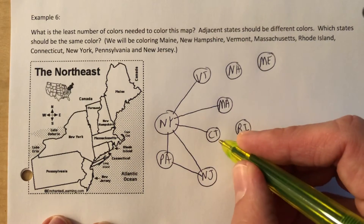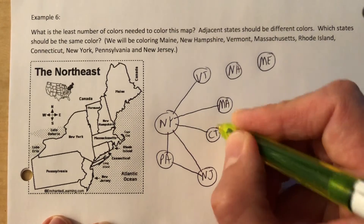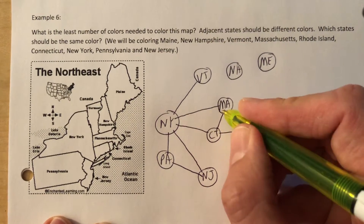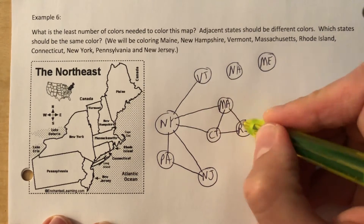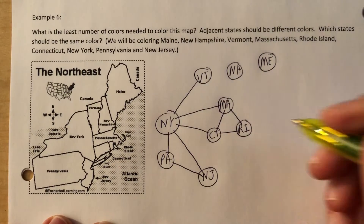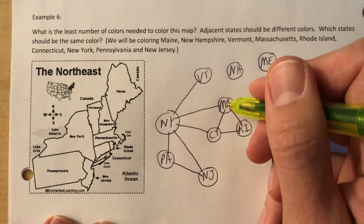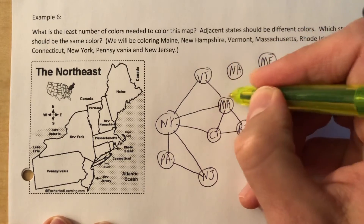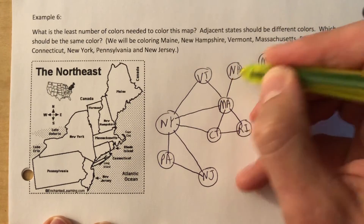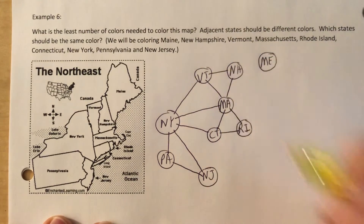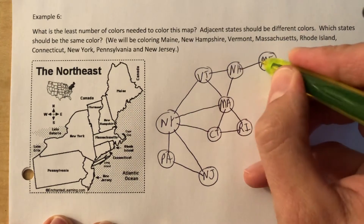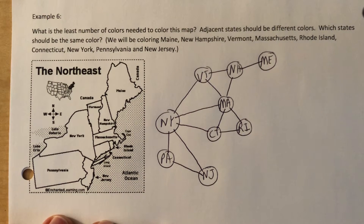Connecticut borders Rhode Island, Massachusetts, and New York. Rhode Island borders Massachusetts and Connecticut. Massachusetts is a big one — Rhode Island, Connecticut, New York, Vermont, and New Hampshire. Vermont and New Hampshire obviously are side by side. Maine borders New Hampshire. Double-checking to make sure everything is right — and it is.